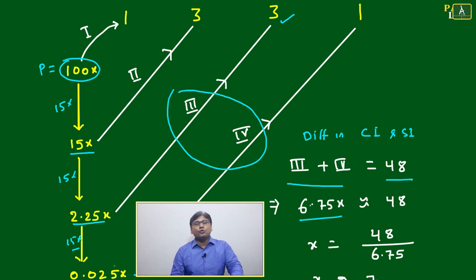If you take the fourth one, it will be 0.025x, which is very, very less. It will change 6.75 to 6.77. Your calculation is not going to be affected, so only the third line will be sufficient.